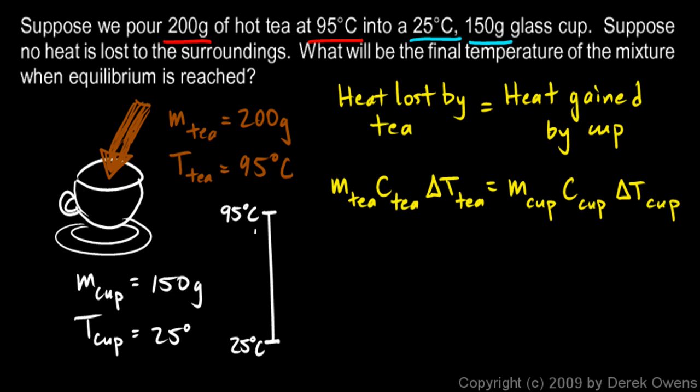So my final temperature is going to be somewhere in between. So I'm going to put a little mark there and write TF. That's my final temperature. And I don't know exactly where that is. That's what I'm trying to find. But I know that the tea will cool off this much, and the cup will warm up this much.